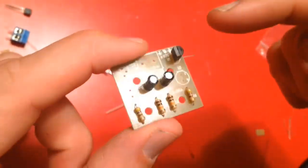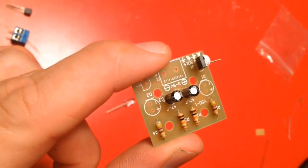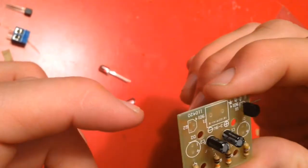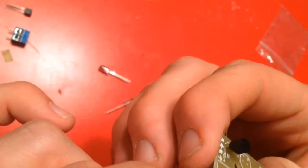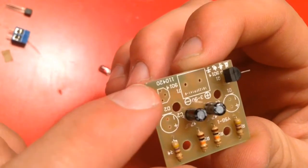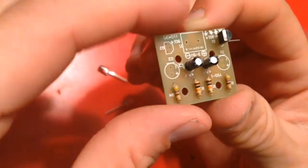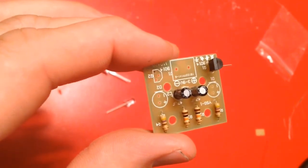So the transistors are supposed to go in to match the flat side. So on this one, the flat side is facing that direction. So I'm going to put those in that way.